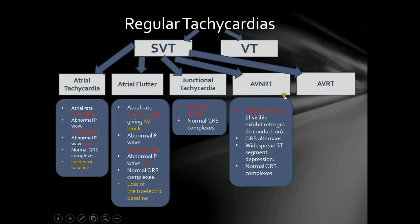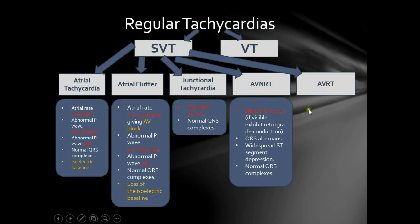The fourth SVT is AVNRT — atrioventricular nodal reentry tachycardia — due to a functional reentry circuit within the AV node. It looks similar to junctional tachycardia, with small differences such as QRS alternans and widespread ST segment depression, but it is not always easy to distinguish them on ECG. The management is more or less the same for most regular SVTs: first line is vagal maneuvers, second line is adenosine, and third line is AV blocking agents such as calcium channel blockers and beta blockers.